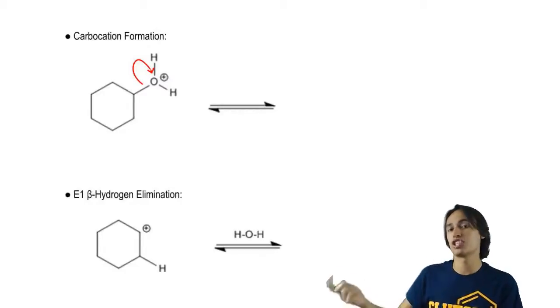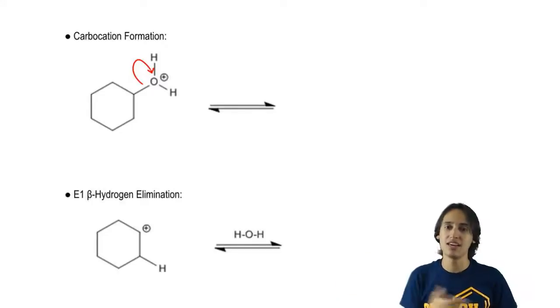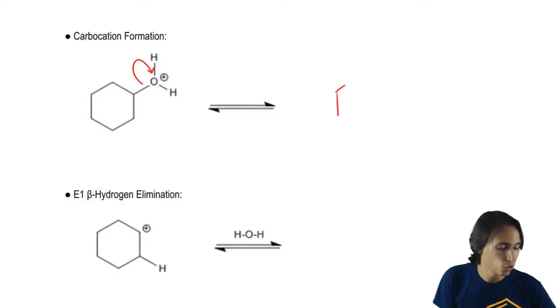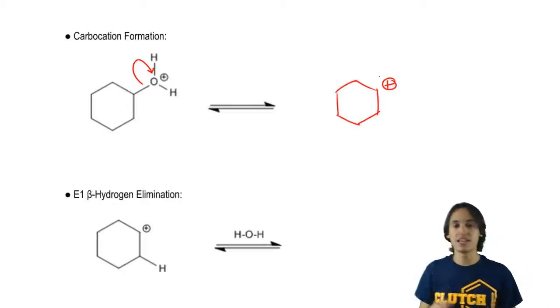For the E2 reaction, I needed to have a concerted three arrows. But in this case, I have such a great leaving group, it's just going to take off by itself. And what I'm going to wind up getting is a carbocation. Notice that in this case, that's a secondary carbocation which is pretty stable.